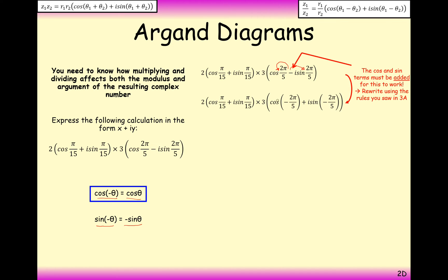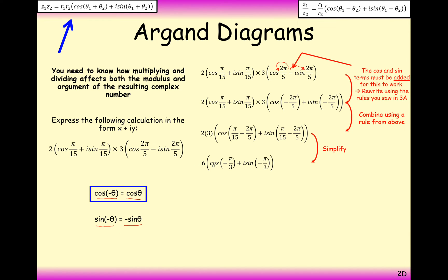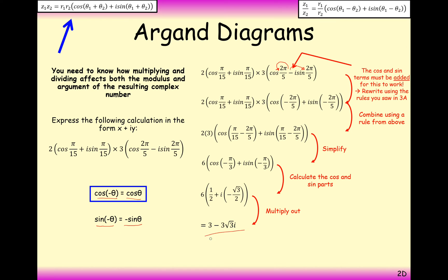Now we can multiply. We multiply the moduli: 2 × 3 = 6. We add the arguments: π/15 + (−2π/5) = π/15 − 2π/5 = −π/3. So we get 6(cos(−π/3) + i sin(−π/3)). Expanding into x + yi form gives 3 − 3√3·i. If you ever have a negative between the sine and cosine, incorporate it into both parts of the argument and change the sign to a plus.